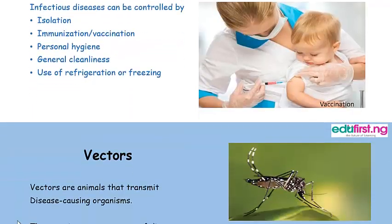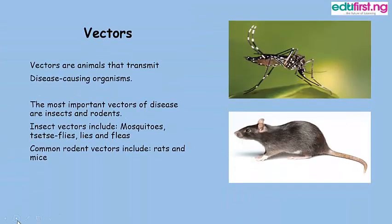Vectors. Vectors are animals that transmit disease-causing microorganisms. The most important vectors of diseases are insects and rodents. Insect vectors include mosquitoes, caciflis, lice, and fleas. Common rodent vectors include rats and mice.